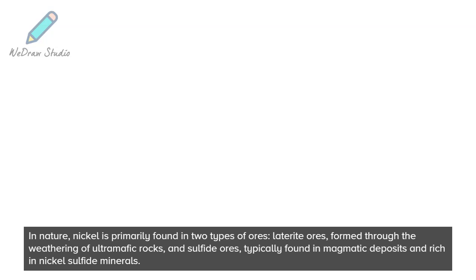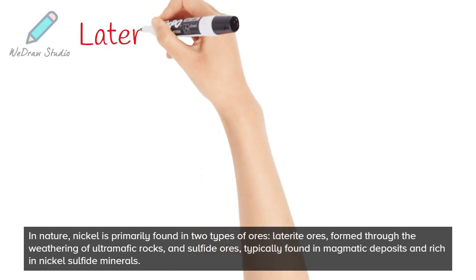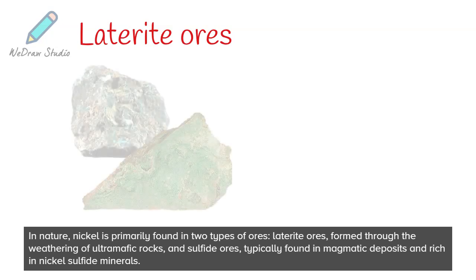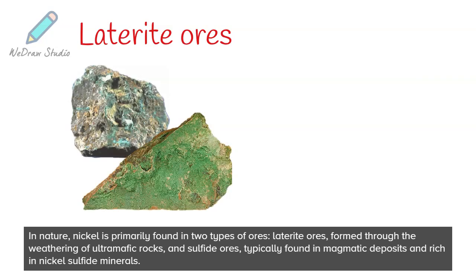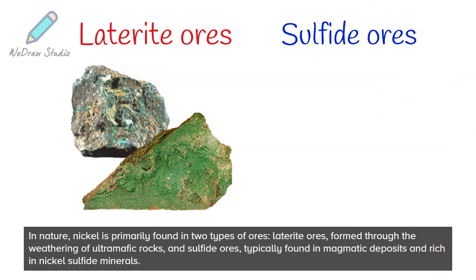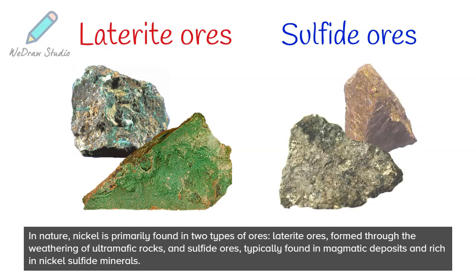In nature, nickel is primarily found in two types of ores: laterite ores, formed through the weathering of ultramafic rocks, and sulfide ores, typically found in magmatic deposits and rich in nickel sulfide minerals.